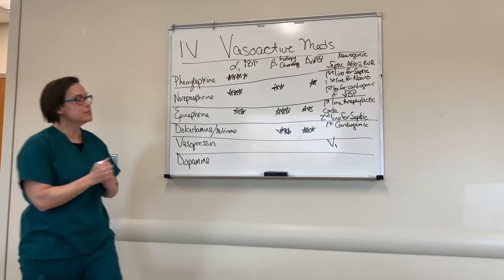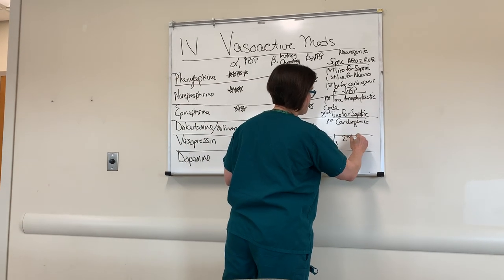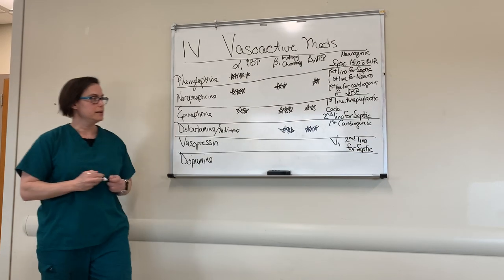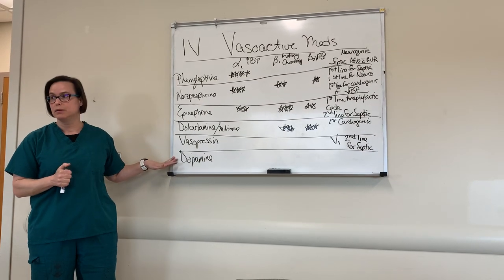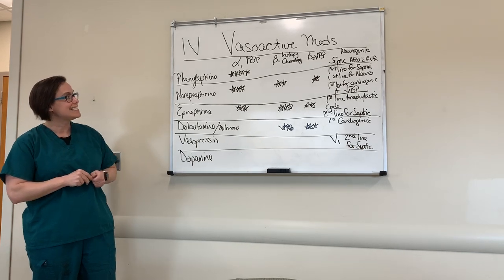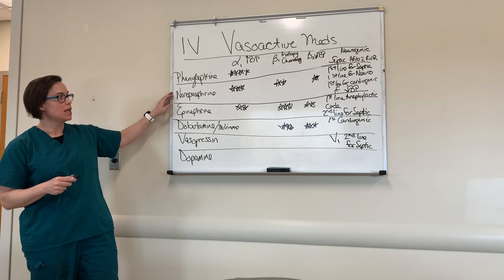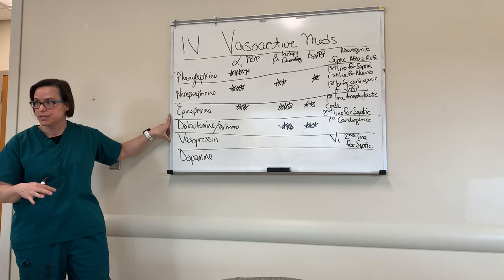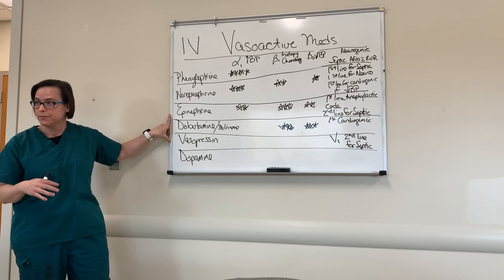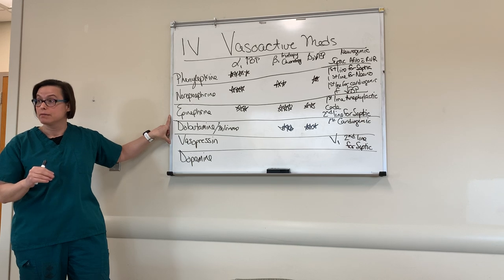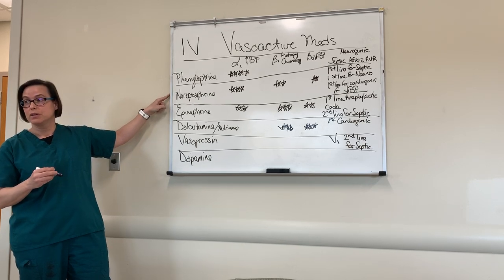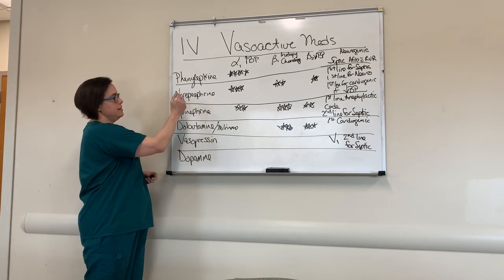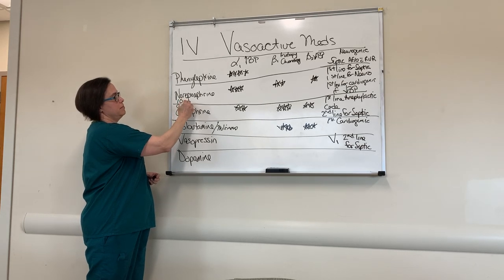Vasopressin is second-line for septic shock. We're not going to focus on dopamine. When norepinephrine is first-line and vasopressin or epinephrine are second-line, here's how I manage it: if a patient is in septic shock and I start them on norepinephrine, I generally start at 10 micrograms per minute — I want that medicine to start moving through the IV tubing and reach the patient.